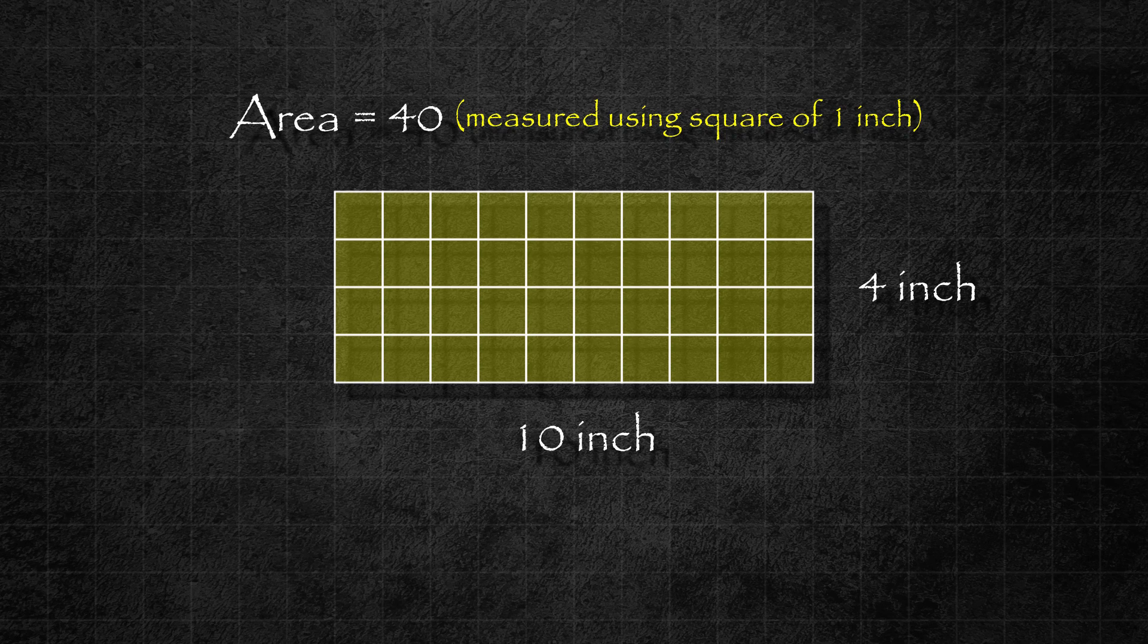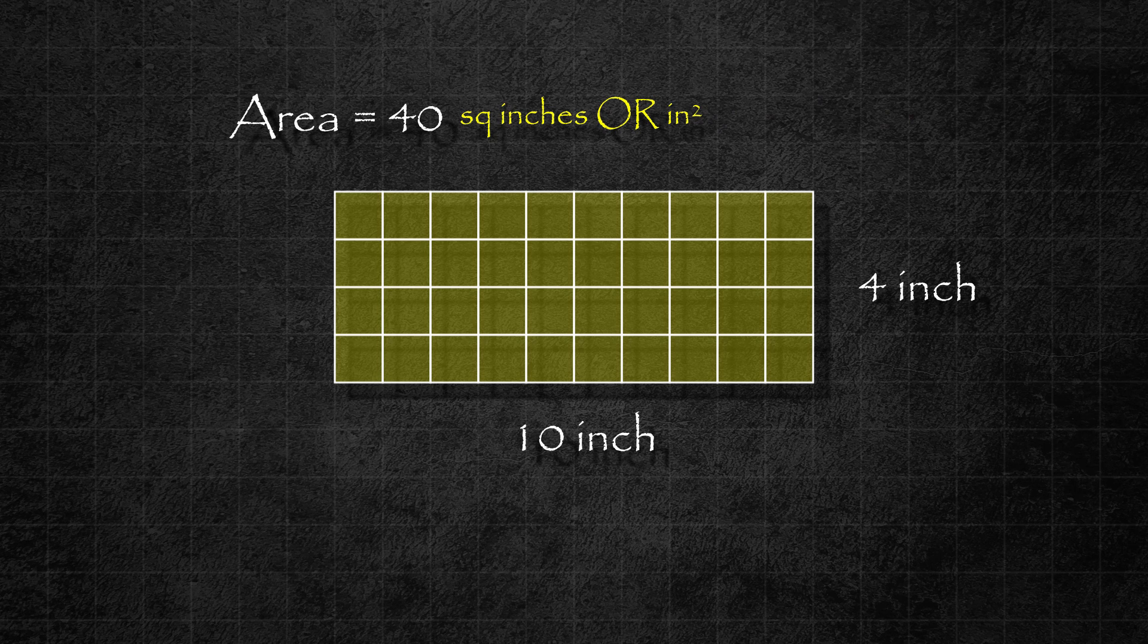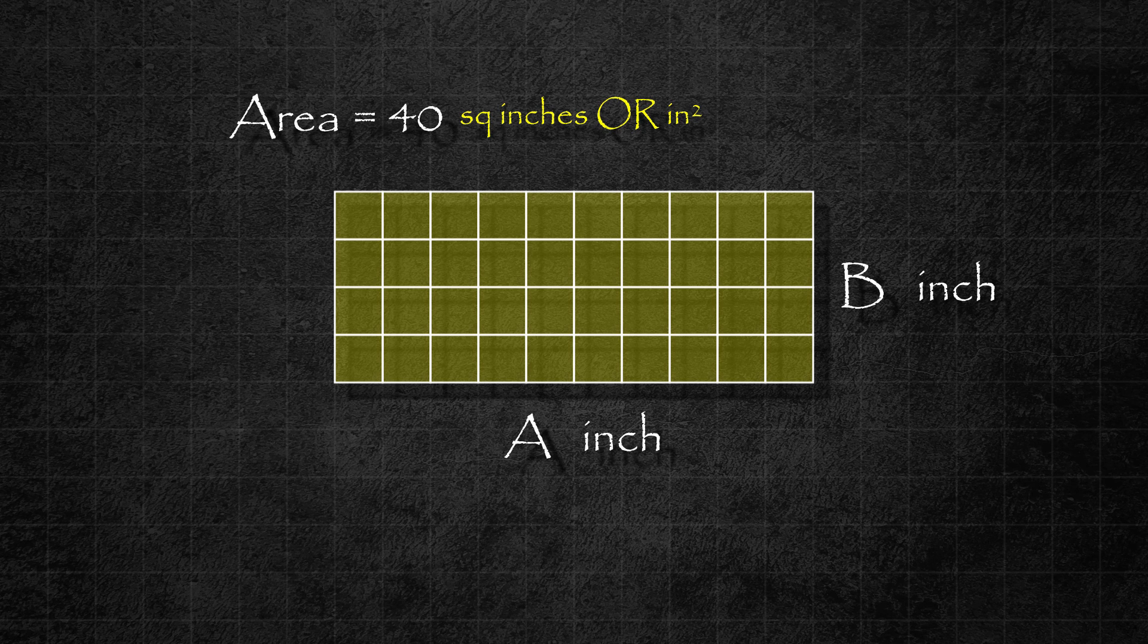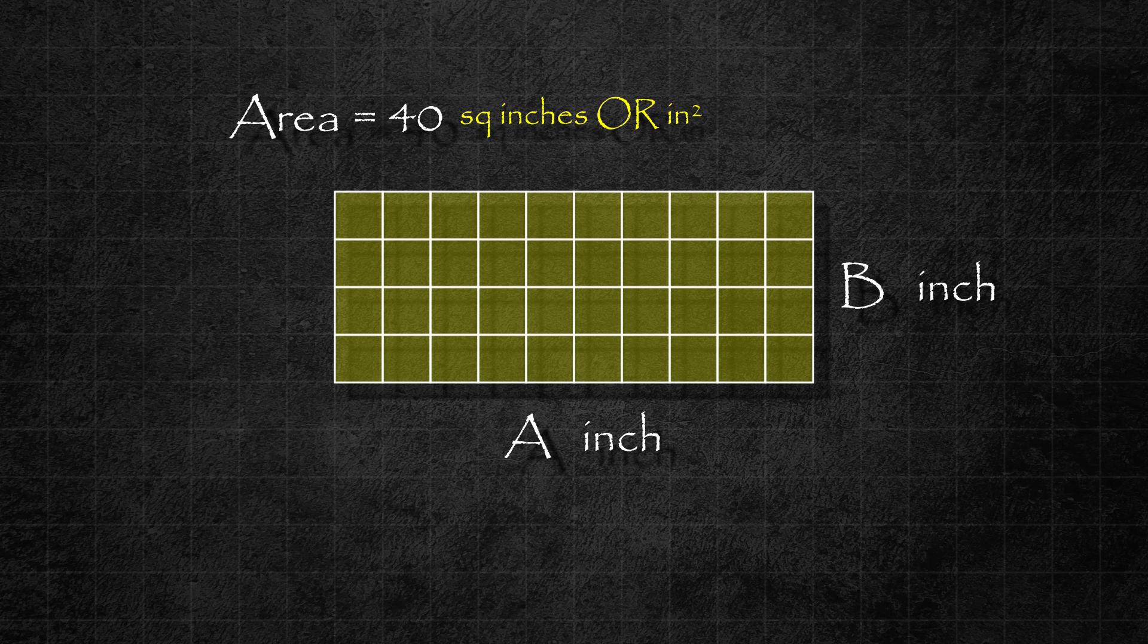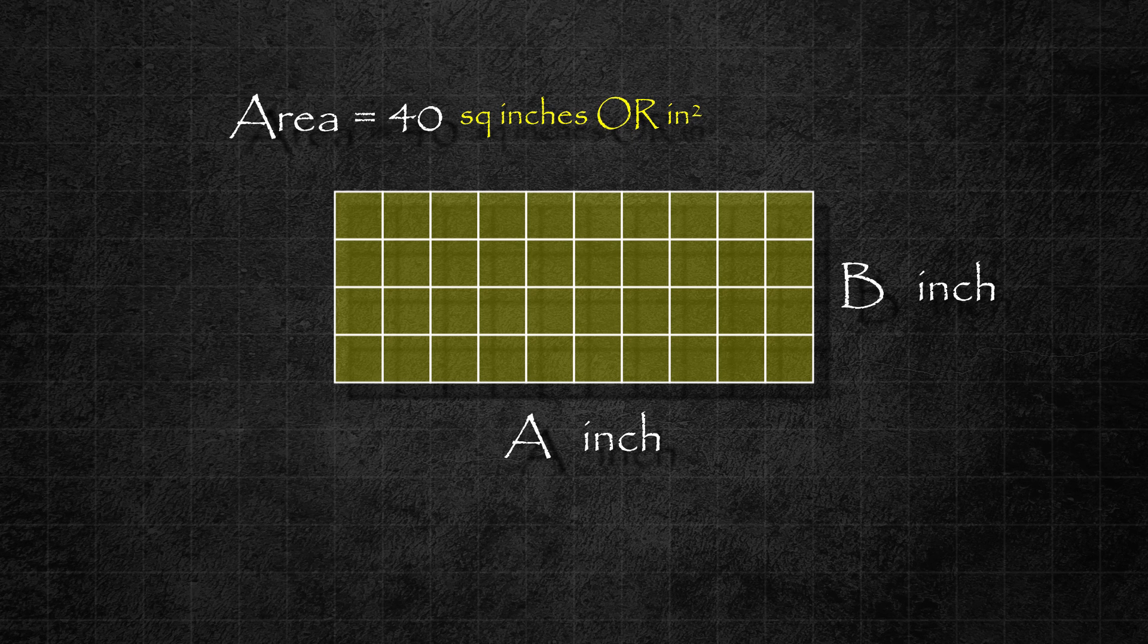Instead of writing this long condition every time, we use a short form: square inches or inch square. More generally, if a rectangle has a width of a inches and height of b inches, then we can fit a squares in each row and b squares in each column. Thus the area of such a rectangle would be a times b square inches.